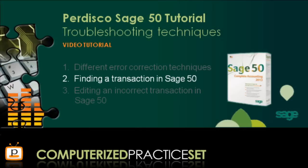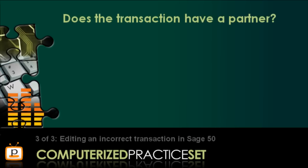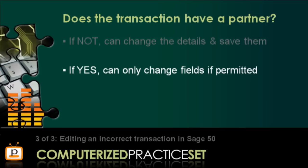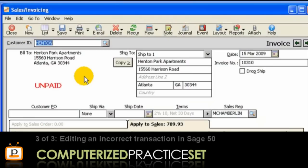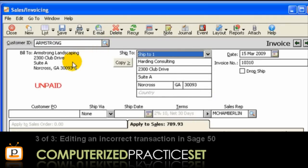Now that we have covered finding transactions in Sage 50, let's learn how to edit the incorrect transaction that we have located. The first question to ask is: does the transaction have a partner or other transactions applied to it? If the answer is no, we can change the transaction details and record the changes by pressing Save. If there are associated transactions, you can only change the fields that are permitted by Sage 50. Let's open the March 15 invoice. Notice this invoice has no payment applied to it, so changing the Customer ID field is a straightforward process. Select Armstrong in the Customer ID field — notice the Customer Name and Bill To Address are changed automatically — then press Save to record the changes.